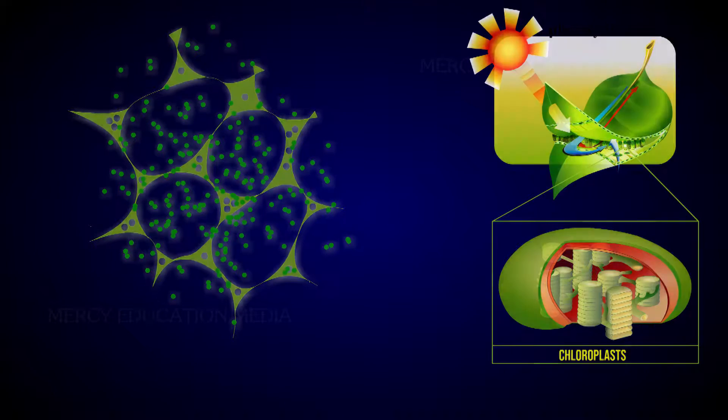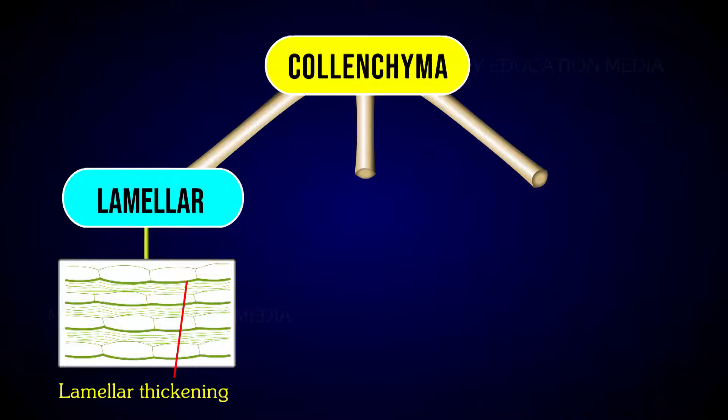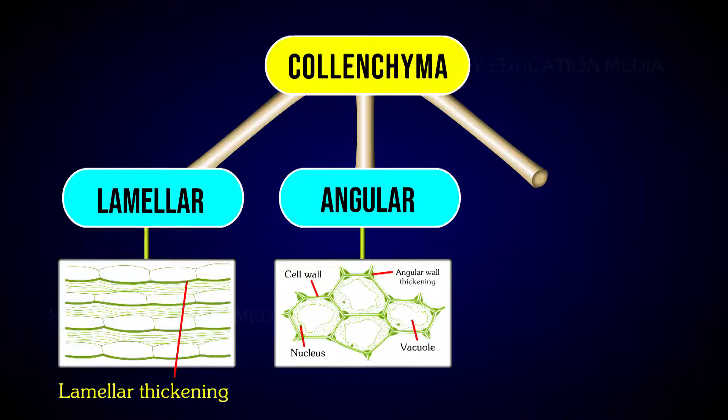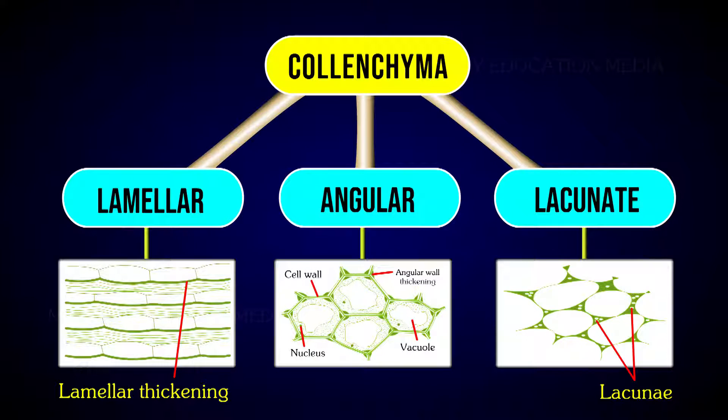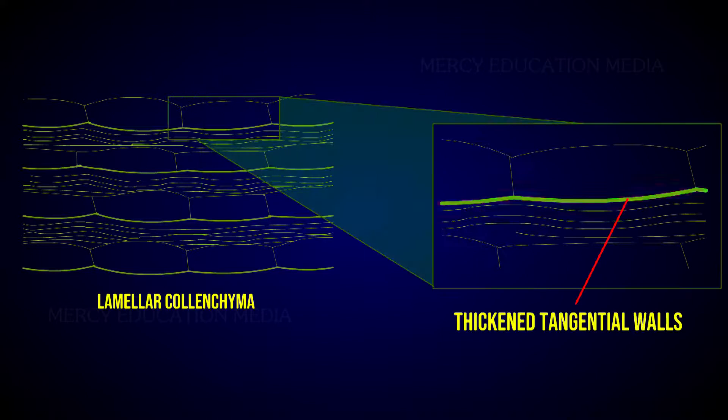Collenchyma is divided into three types: lamellar, angular, and lacunate collenchyma. In the hypodermis of Helianthus, only the tangential walls of collenchyma are thickened and the radial walls are devoid of thickening. This type of collenchyma is called lamellar collenchyma.